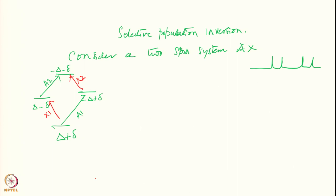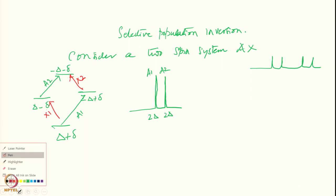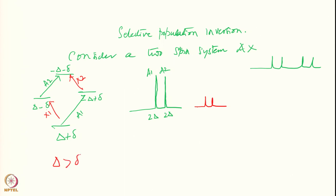I call the transitions a1, a2, x1, and x2. The intensity of the a transitions is the population difference — so a1 and a2 both have intensities of 2δ. Similarly x1 and x2 also have intensities of 2δ (with Δ > δ noted). Now what I do is selectively invert transition a1 — this is selective population inversion.